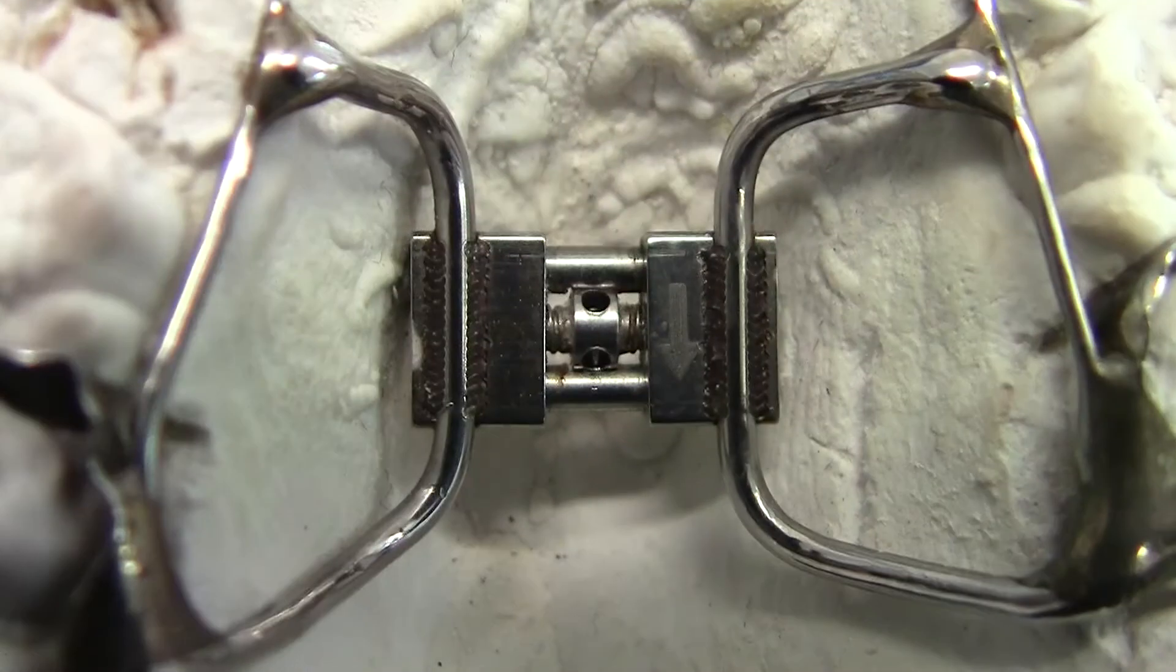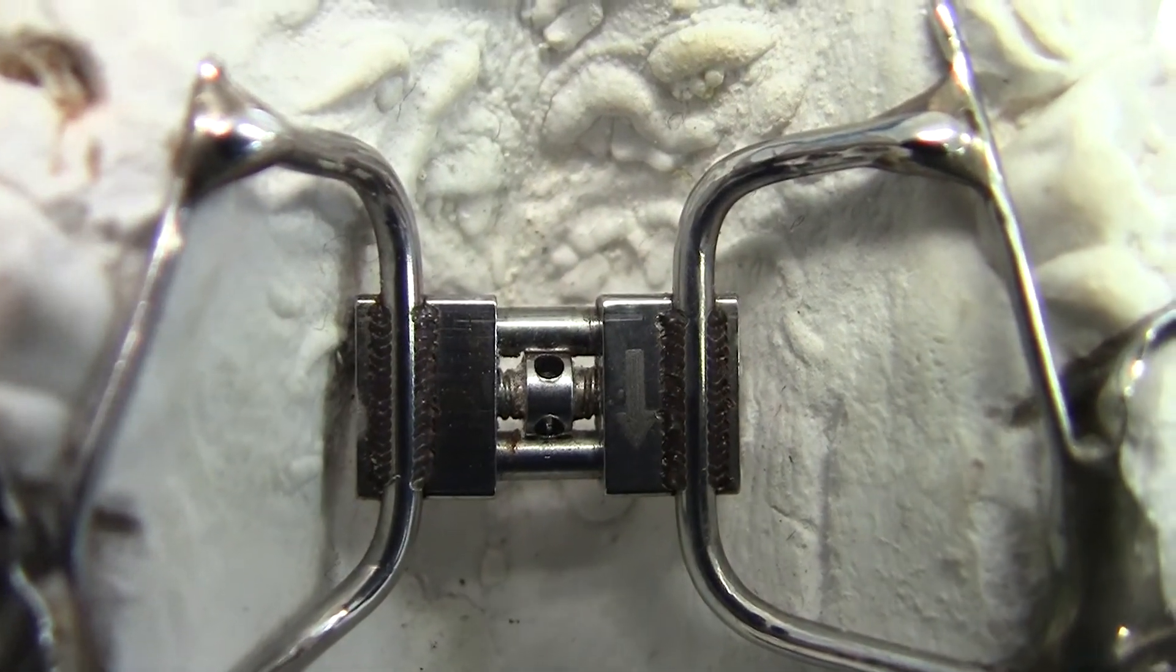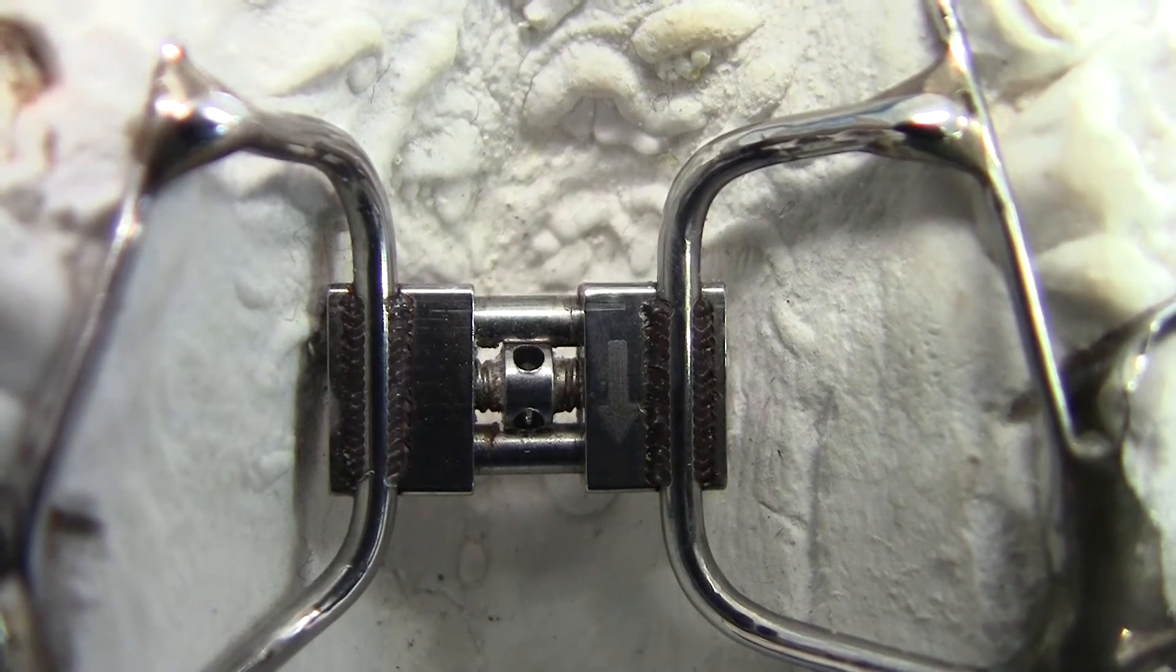Located in the center of the expander you'll see a little keyhole with an arrow on either side. This shows the direction the key needs to be pushed in.